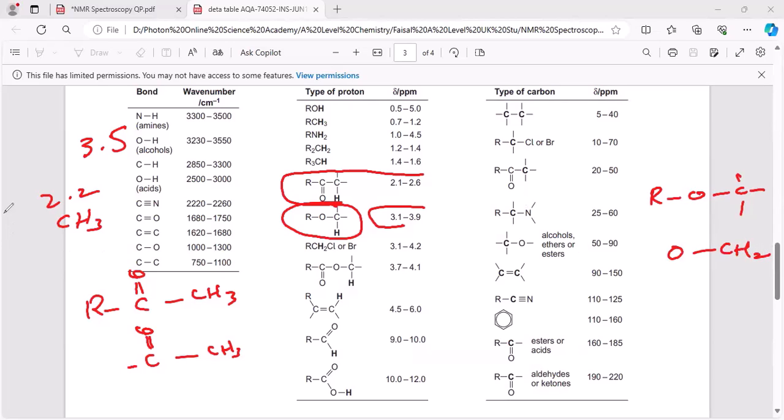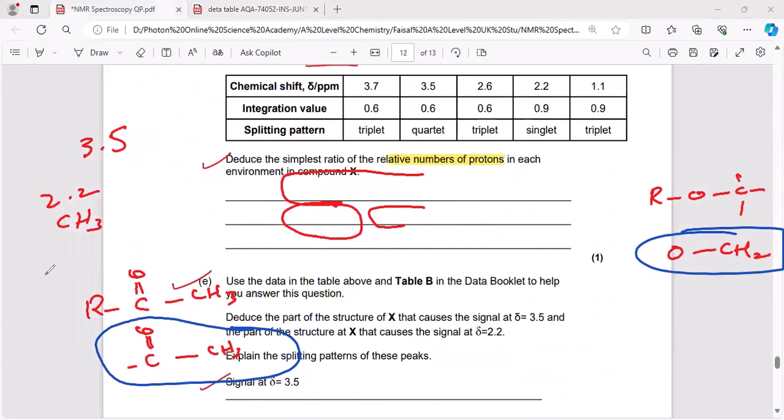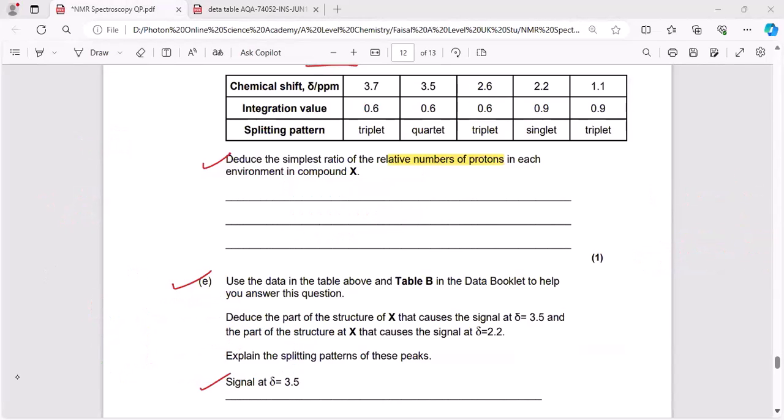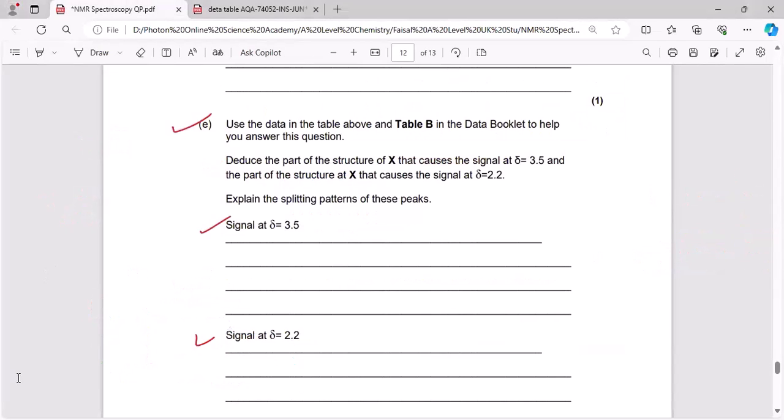So this is the other fragment. I must say note down these two fragments. So it means signal at chemical shift 3.5 is OCH2. While the signal at chemical shift 2.2 is C double bond OCH3. Like that we calculated.